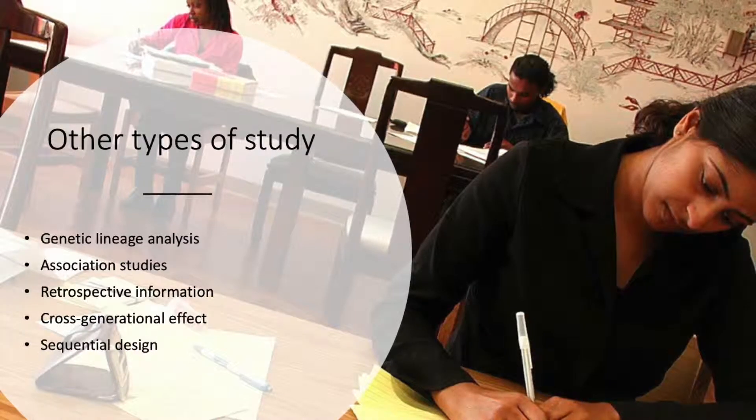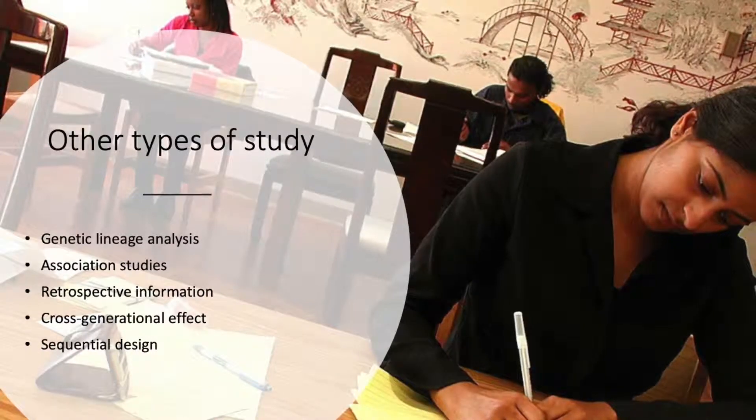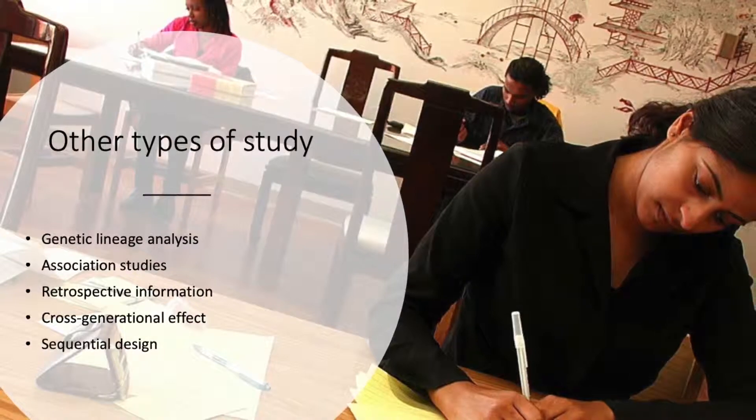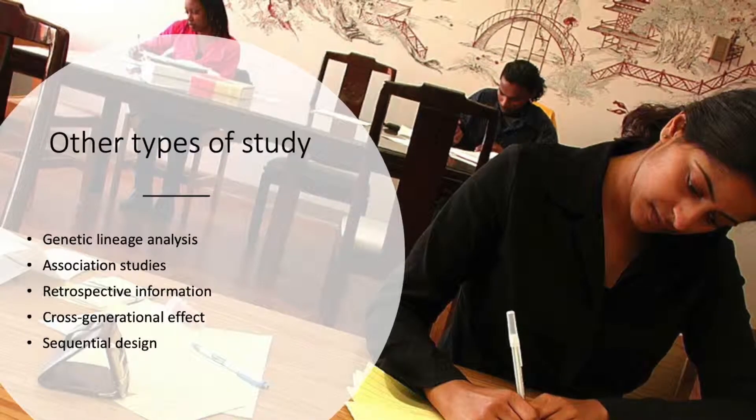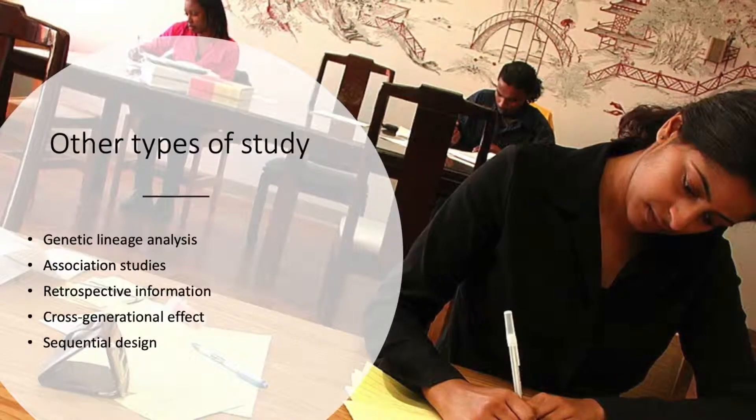Association studies use genetic markers but compare people who have and don't have the disease. If there's more of a certain genetic marker present then that could indicate a stronger correlation with the issue at hand.